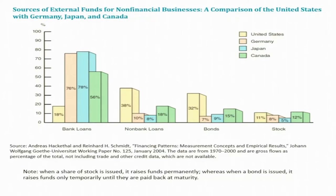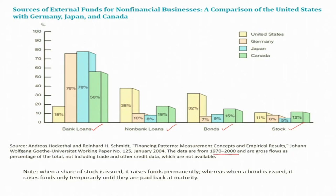Look at this figure — it shows the sources of external funds for non-financial businesses, comparing the United States with Germany, Japan, and Canada. You can see the four major sources of external funds: bank loans, non-bank loans, bonds, and stock. This is data from 1970 to 2000, showing the percentage of total external funds for firms.